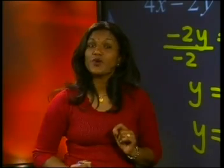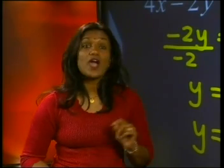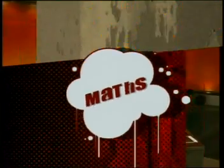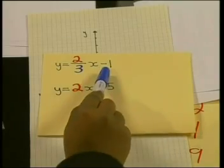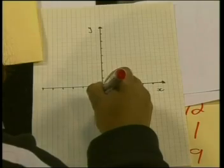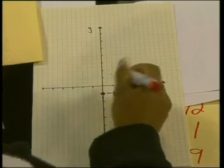We are ready to plot the graphs of the two equations. We asked Hayley and Wesley to show us how they drew their graphs. Let's see how Hayley draws her graph. We can see from the equation that the y-intercept is equal to negative 1, so we can plot negative 1 on the y-axis.